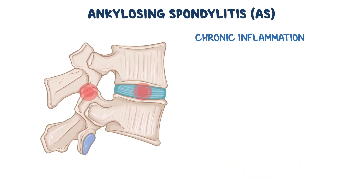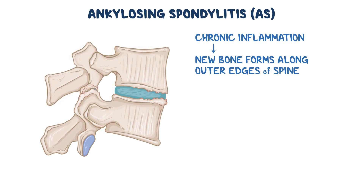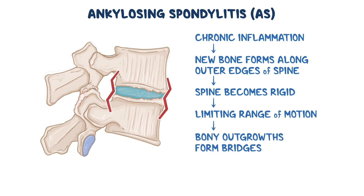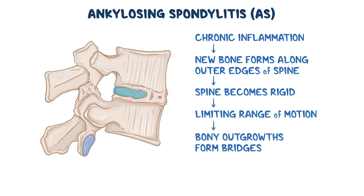Chronic inflammation causes new bone to form along the outer edges of the spine. The affected part of the spine becomes more rigid, limiting its range of motion. As the condition progresses, the bony outgrowths grow bigger until they form bridges among adjacent vertebrae, causing ankylosis, or fusion, of the entire spine.